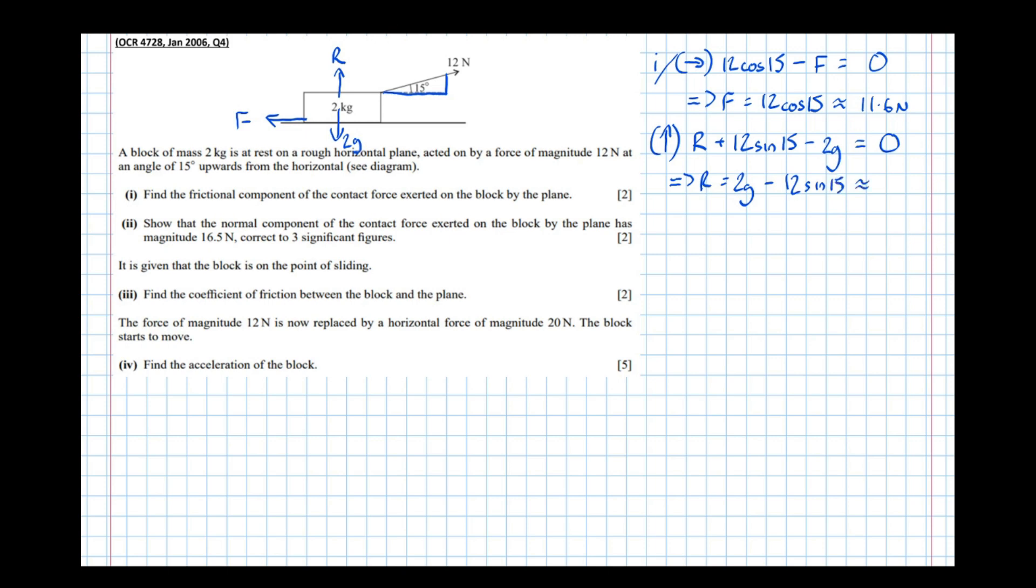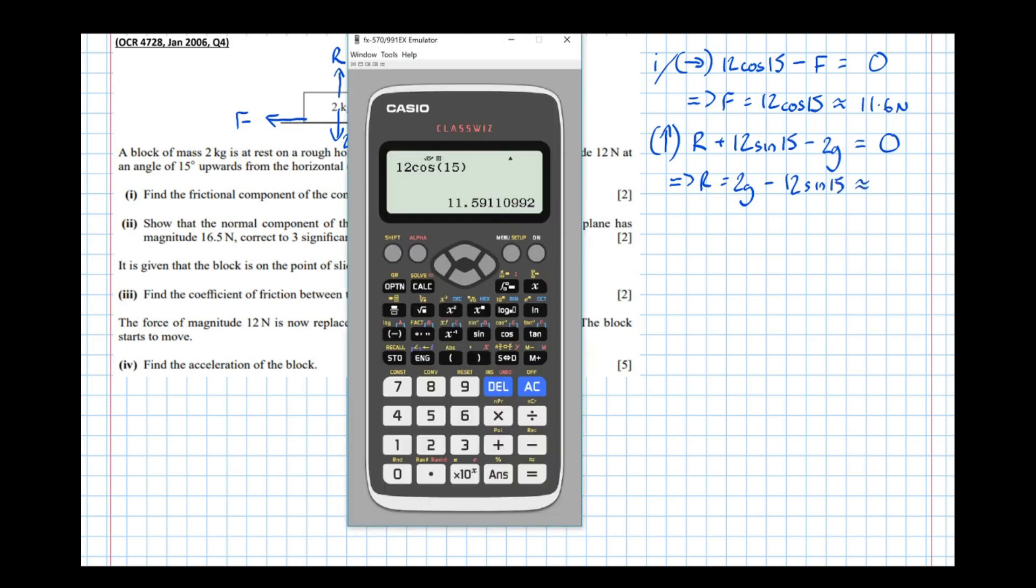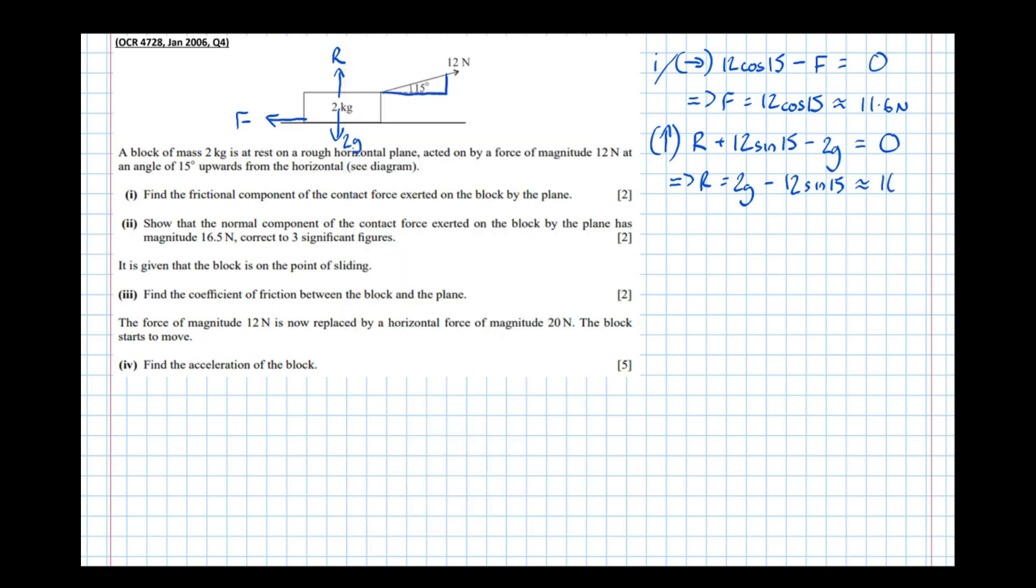Which is approximately equal to, well let's just check this, 2 times 9.8 take 12 sine 15 equals 16.5 Newtons. So that was part 2 that we've just done.